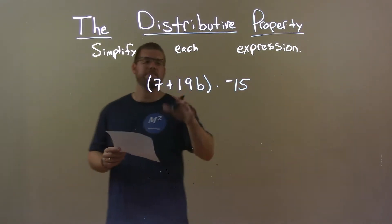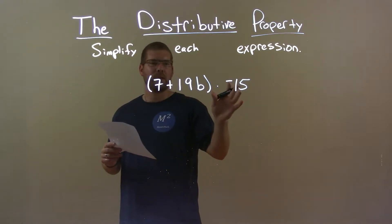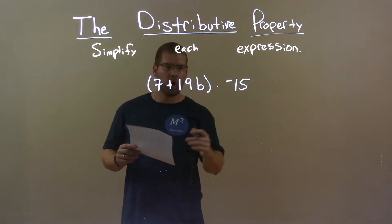Now within my parenthesis there's nothing I can do to simplify this, so I'm gonna have to multiply the negative 15 to both parts now.